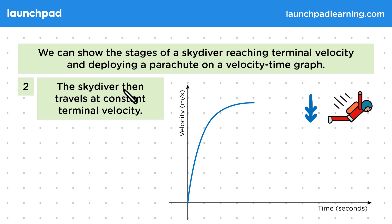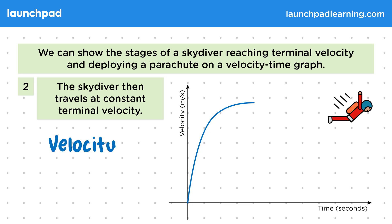The skydiver then travels at constant terminal velocity. When the air resistance increases to the point where it balances the weight, the skydiver no longer has a downward acceleration. This means that the velocity will be constant. On a velocity-time graph we show this by drawing a horizontal line so that the y value isn't changing. If we were only looking at a simple terminal velocity example like dropping a coin from a height, we could finish drawing the graph here.